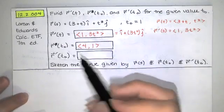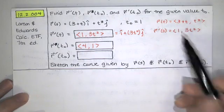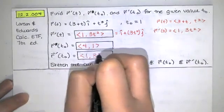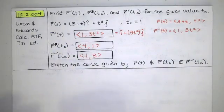Okay, and then the last thing we want to do is find r prime at t naught. So we just evaluate this at t equals 1. So that's a vector with components 1 and 3 if t equals 1. So those are our answers to that part.